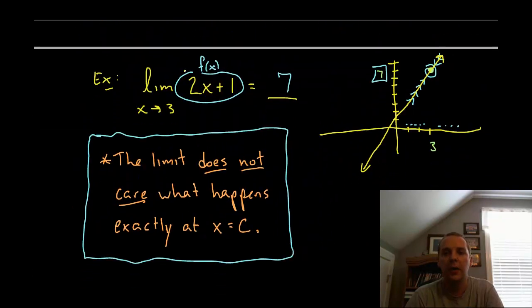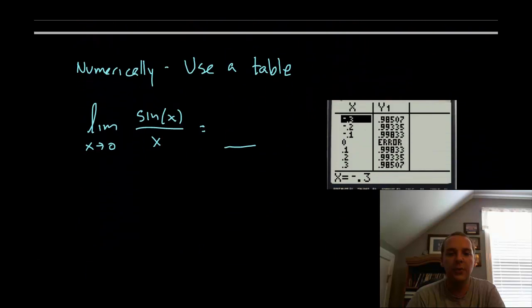The limit as X approaches zero for sine X over X. If we tried plugging in the value like we did for this easy example back up here, right here, where we got seven because the function value at three was the same as the limit, you notice you get zero over zero, sine of zero is zero, divided by zero. So we're tempted just to say, well I guess the limit doesn't exist, I got zero over zero, so I'm going to the next problem. But again, I'll say it again, the limit doesn't care what happens at zero.